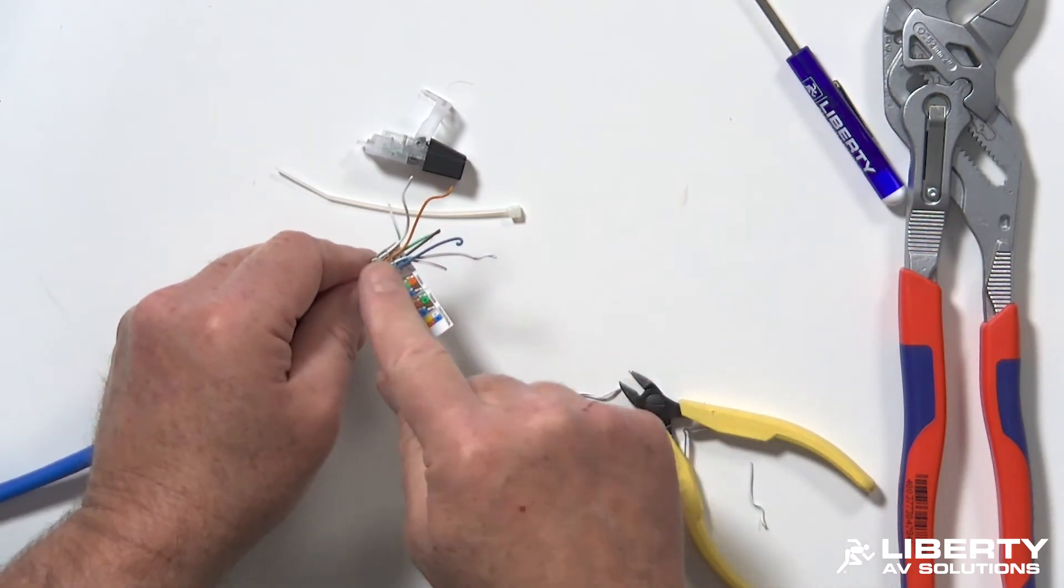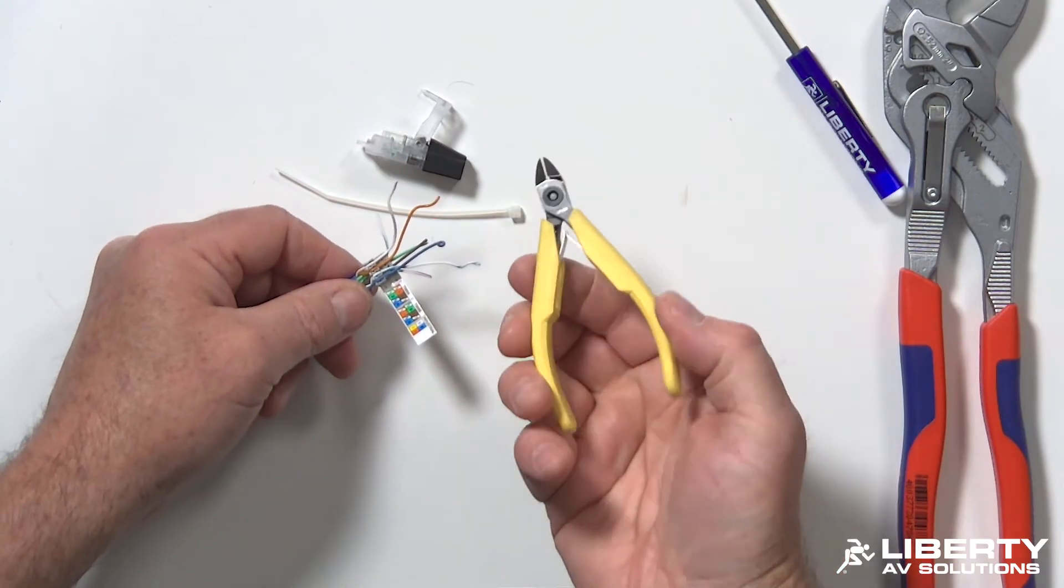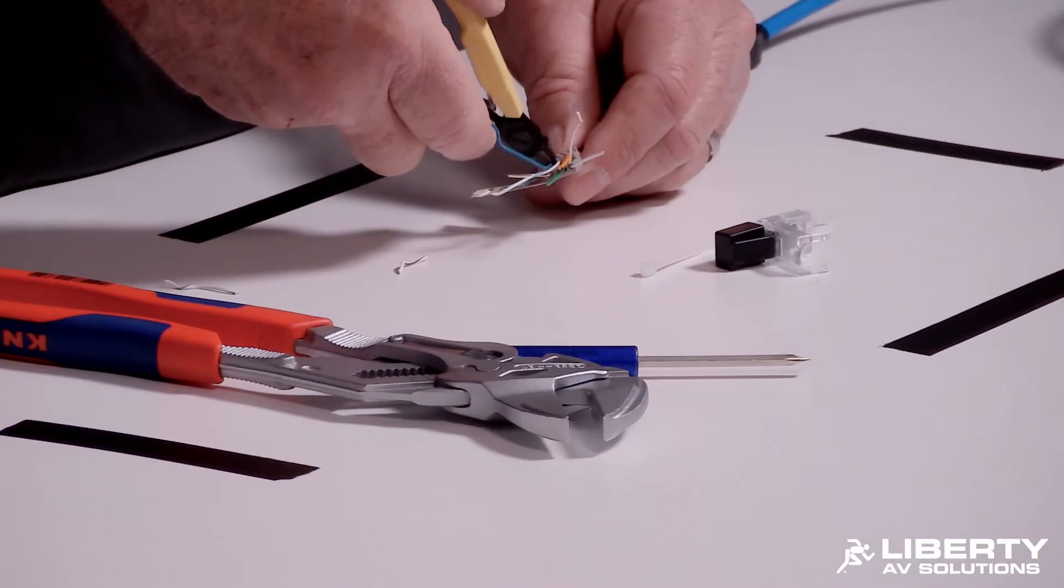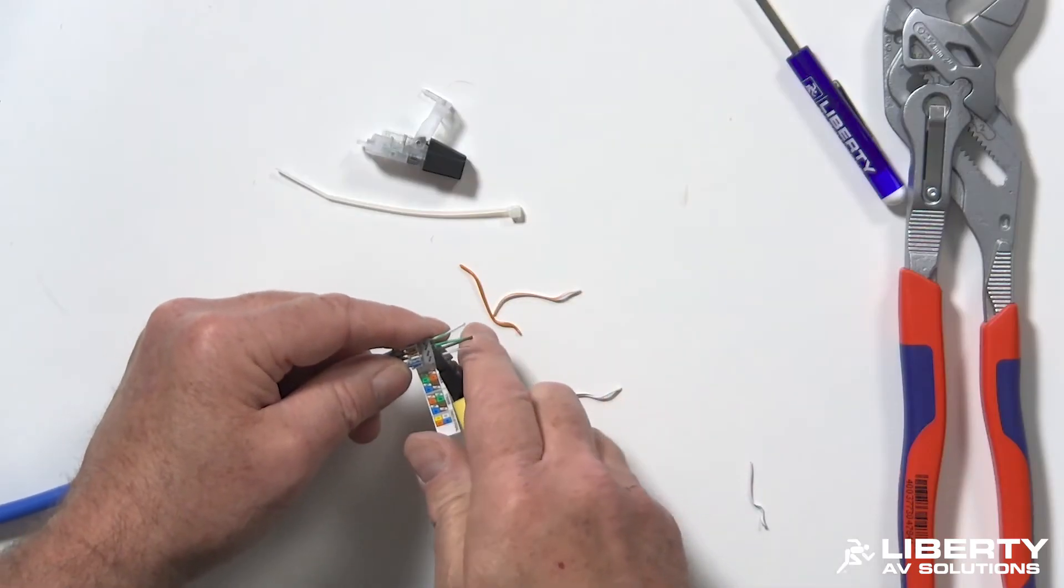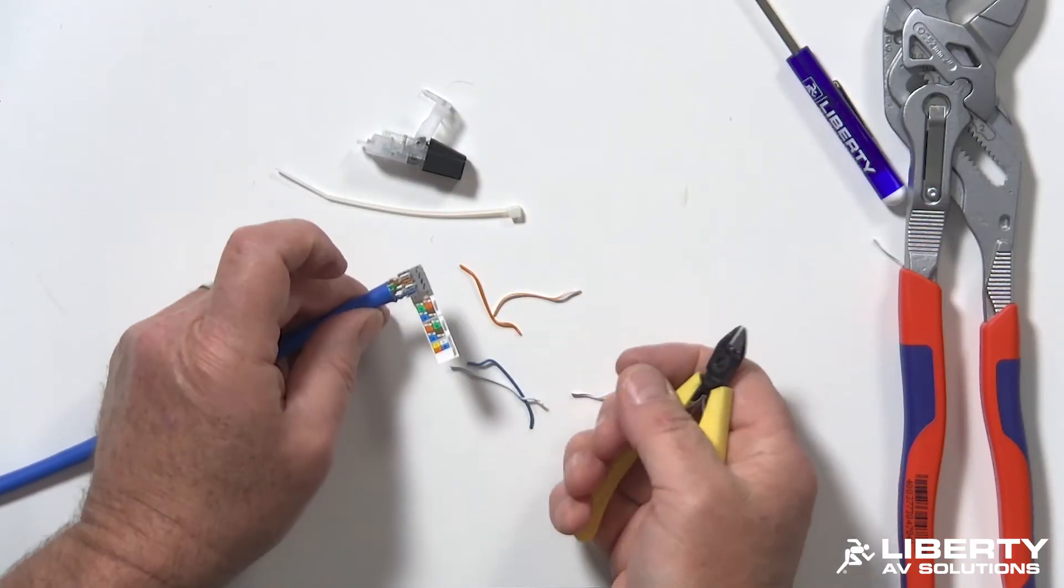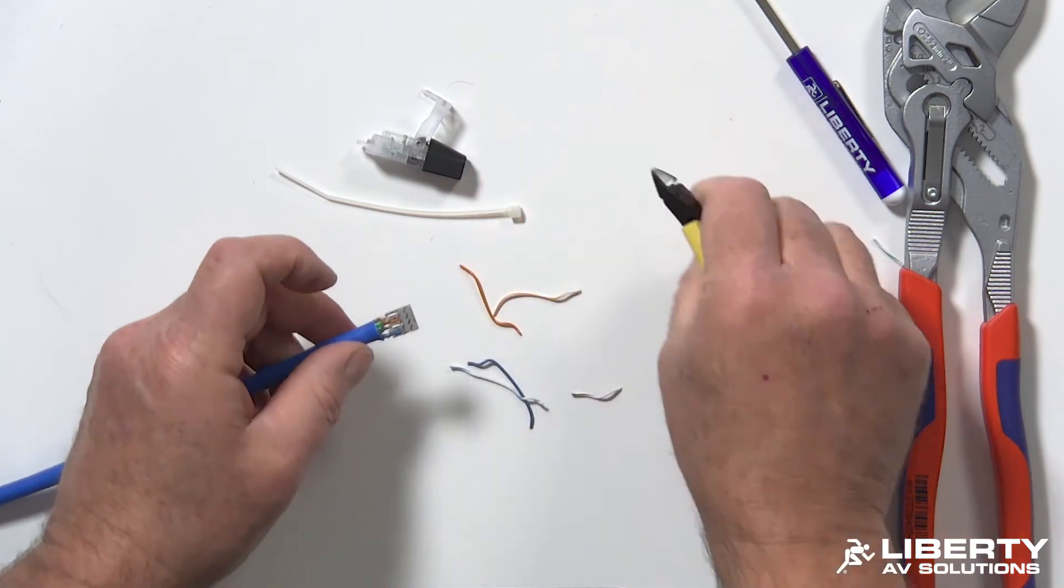Once I have all that done, I go ahead and trim off my wires now. Using the flush cut side of the flush cutters, I'm going to go ahead and pop each one of these. And that's all done. I go ahead and pull off my color code indicator.